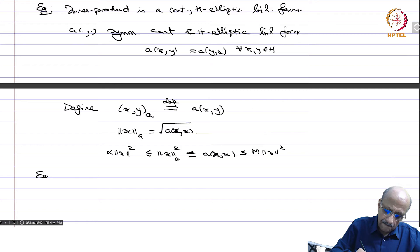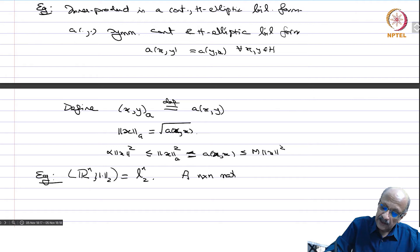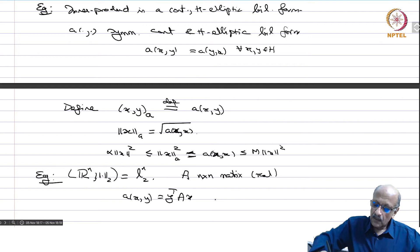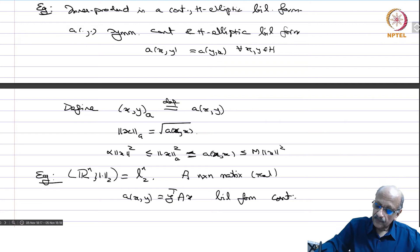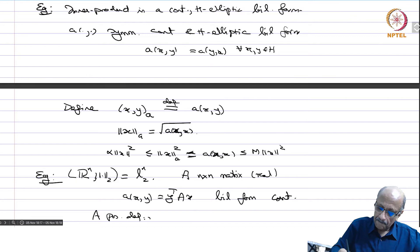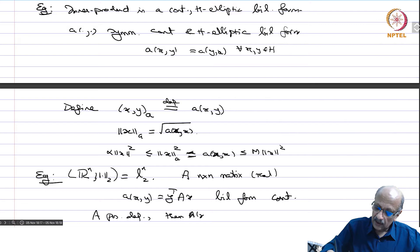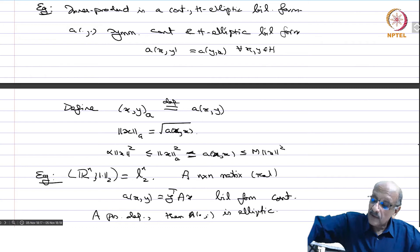Another example: if you have R^n with the 2-norm, that is our space L^n_2, and A is an n-by-n real matrix, then A(x,y) equals y-transpose times A times x. This is a bilinear form and obviously continuous. If A is positive definite, then A(x,y) is H-elliptic, or R^n-elliptic.